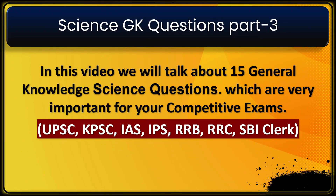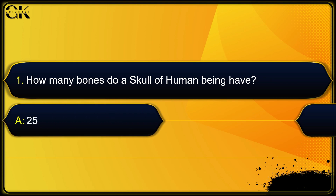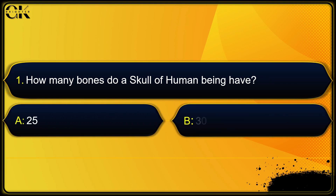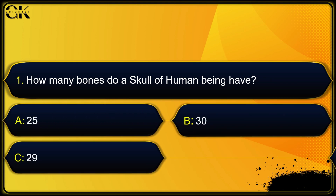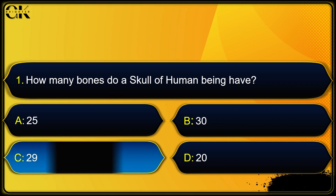Science GK questions part three. In this video we will talk about 15 general knowledge science questions which are very important for your competitive exams. Question: How many bones does the skull of a human being have? Options: 25, 30, 29, or 20. The answer is 29.